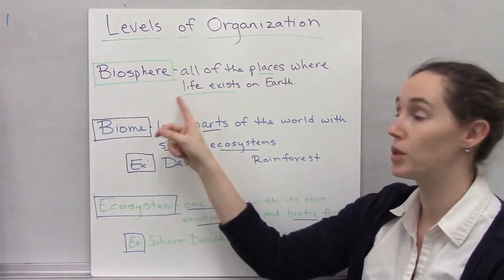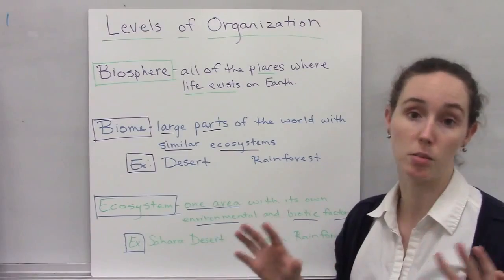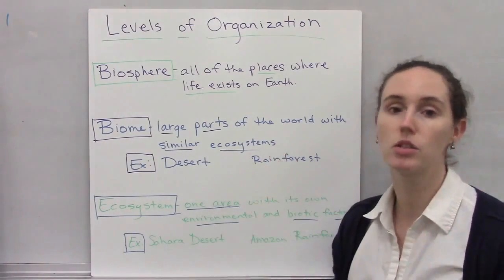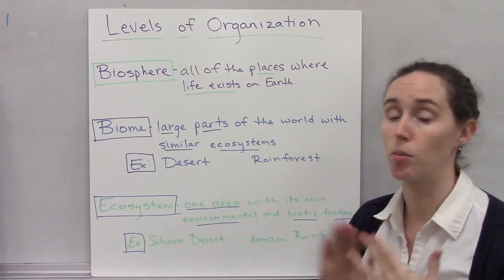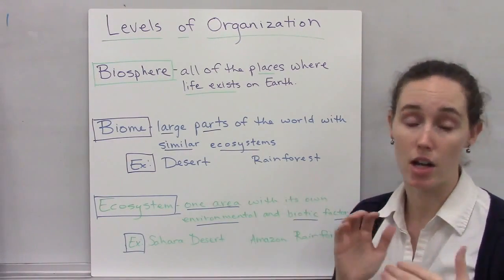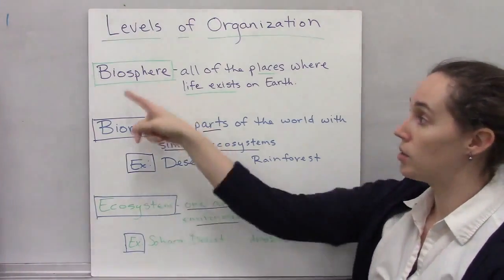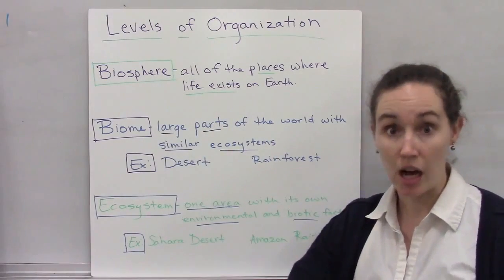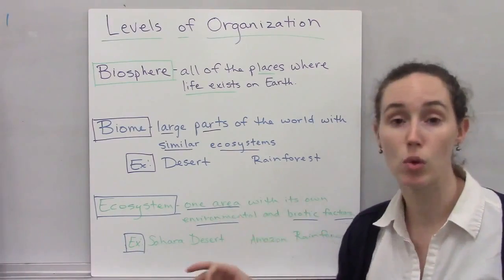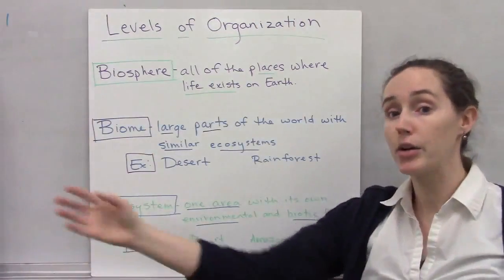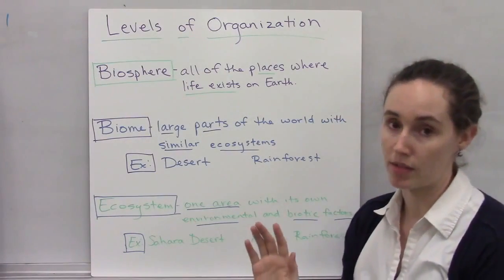We start with the biosphere, which is basically everywhere on earth that organisms can possibly live. And organism doesn't just mean plants and animals — fungi, protists, bacteria, and archaea are all part of living things. So the biosphere isn't just what's on top of the earth; it includes things in the soil and in the air. The biosphere is all the places on earth where life exists.